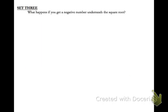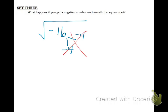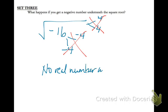Finally, look at set 3: what happens if you get a negative number underneath the square root? If you have negative 16, you might think the answer is negative 4, but negative 4 times negative 4 does not equal negative 16. And positive 4 times positive 4 is positive 16. So there is no real number answer for a negative under the square root. There are imaginary solutions, but that will be for another class.